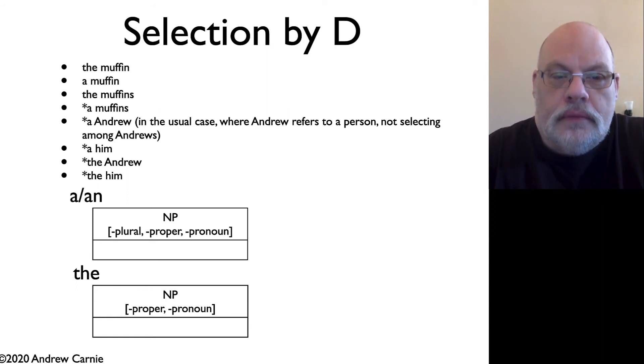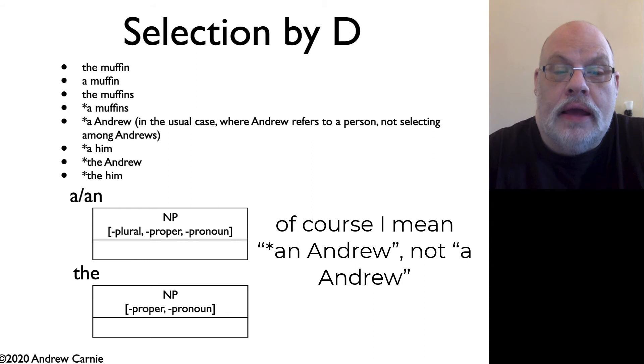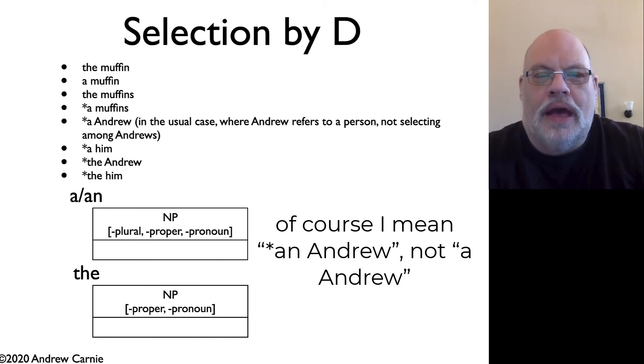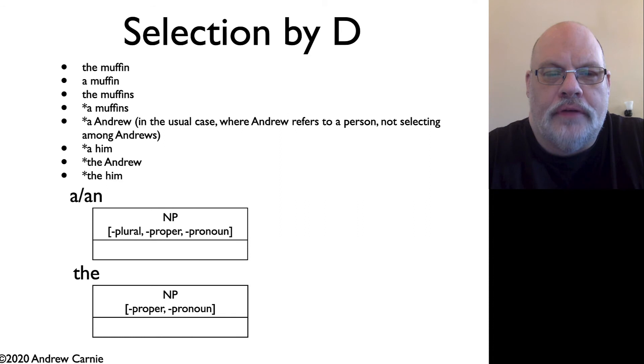To make it richer, we also note that neither of these two determiners can appear with a proper name or with a pronoun. So you can't say 'a Andrew', 'a him', 'the Andrew', 'the him'. Those are all ungrammatical. 'A Andrew' might be okay when you can imagine a situation where you have a room full of Andrews, and I say, oh, I don't care who, just pick an Andrew. But that's not the case that we're interested in here.